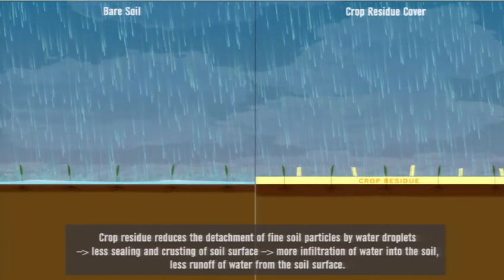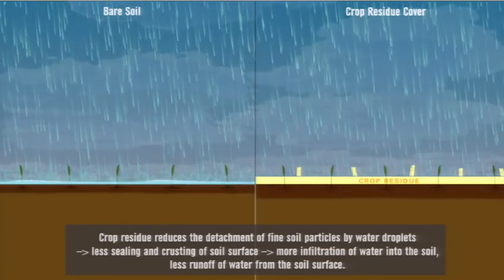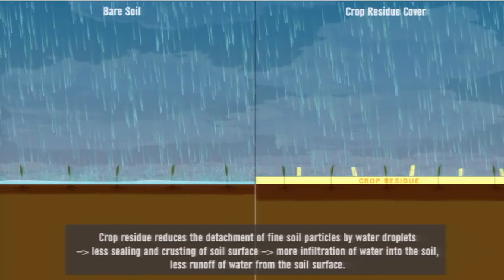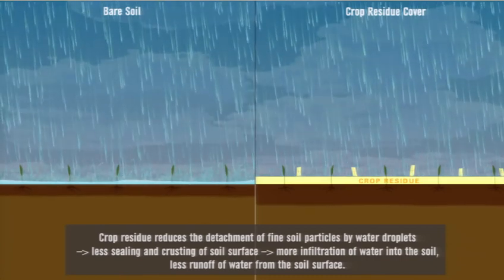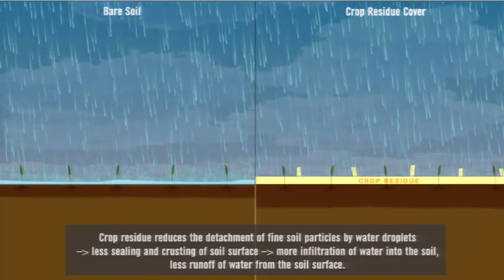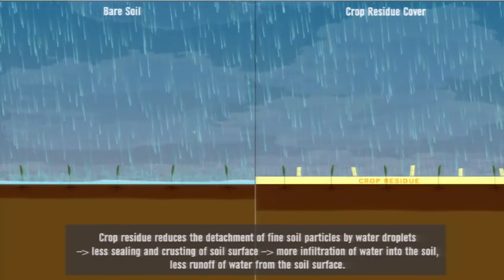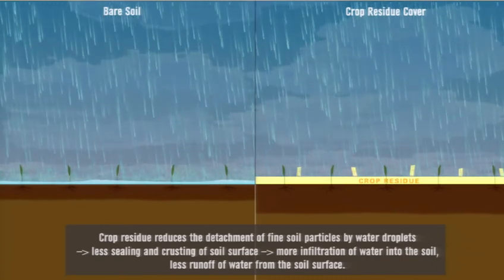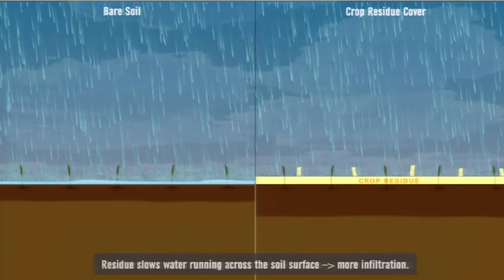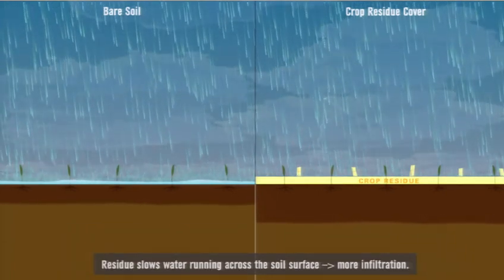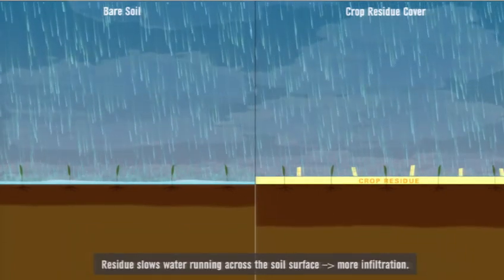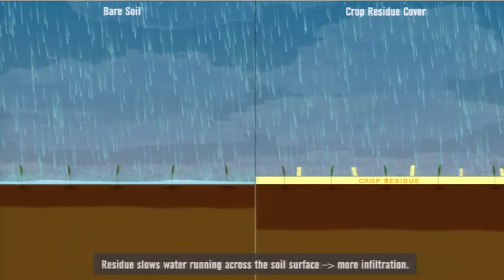Crop residue reduces detachment of fine soil particles by water droplets, resulting in less sealing, more infiltration of water into the soil, and less runoff of water from the soil surface.